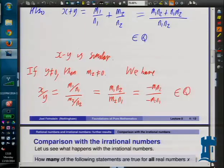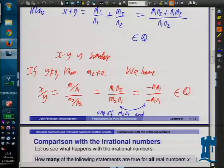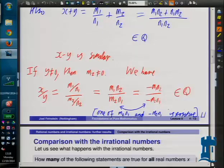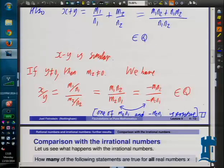One of m2 times n1 and minus m2 times n1 is positive. So that's definitely in Q. That should fit with what you expected from primary school, secondary school, about adding, subtracting, and dividing rational numbers and getting rational numbers. Are there any questions about that result about rational numbers?